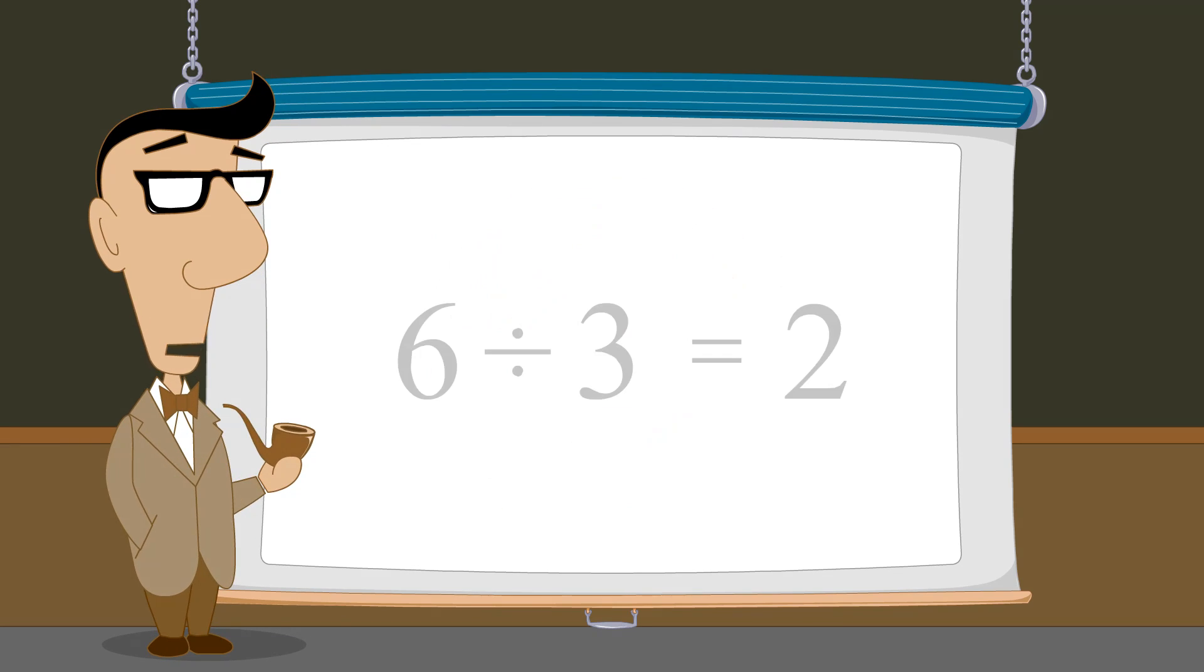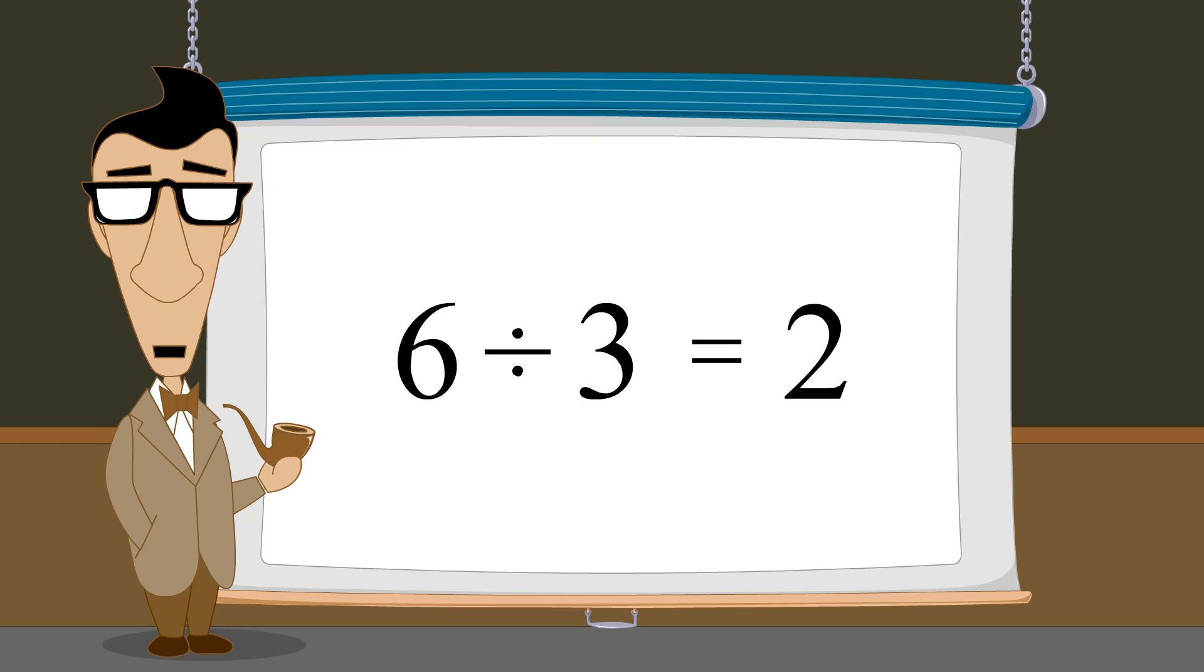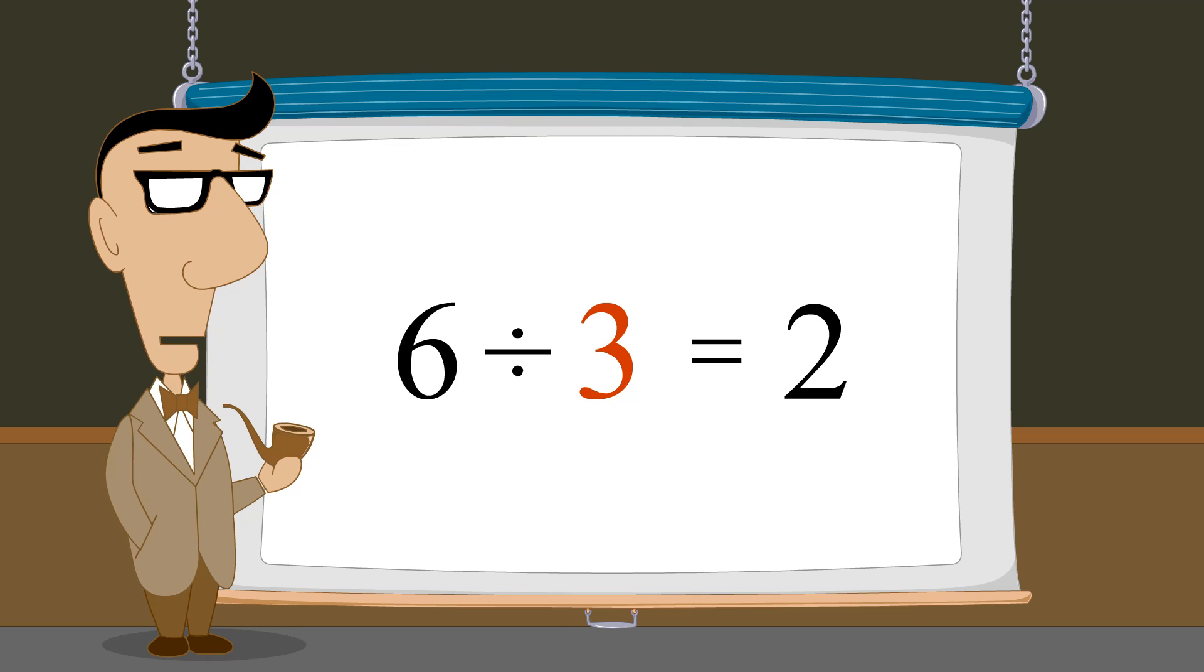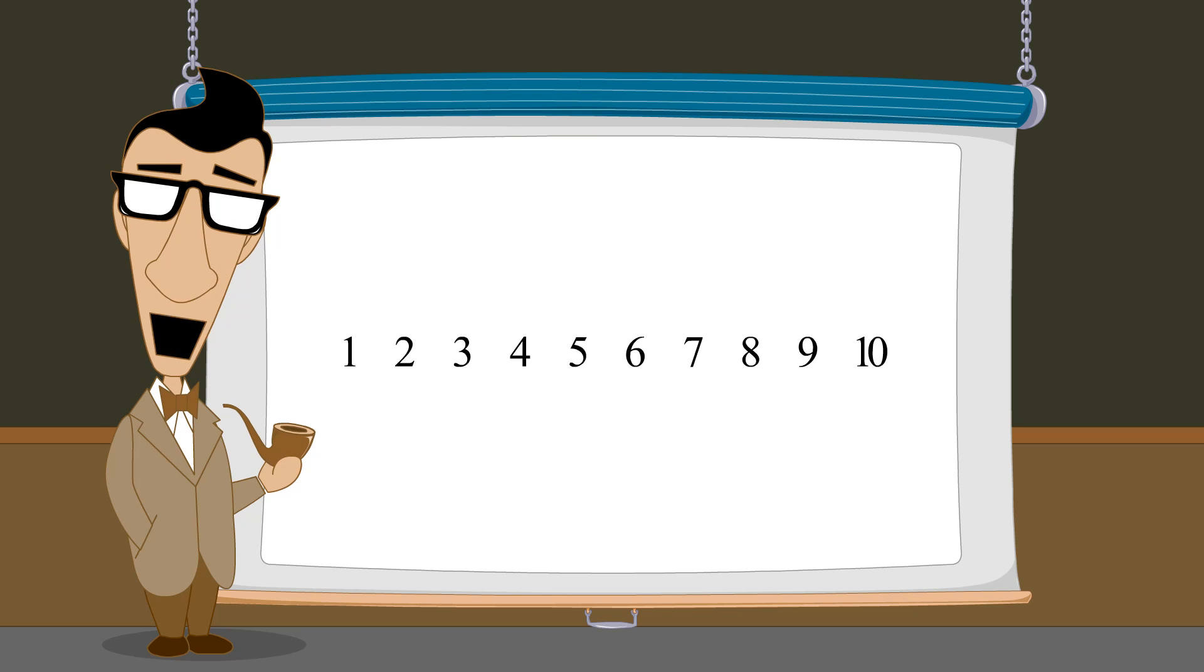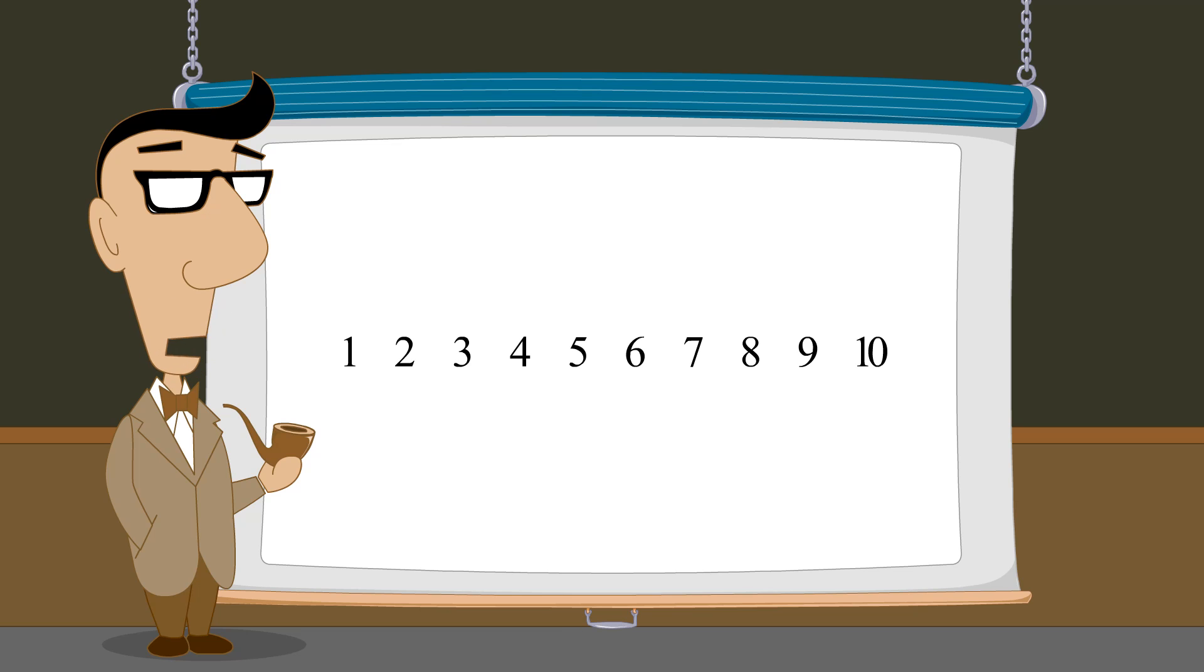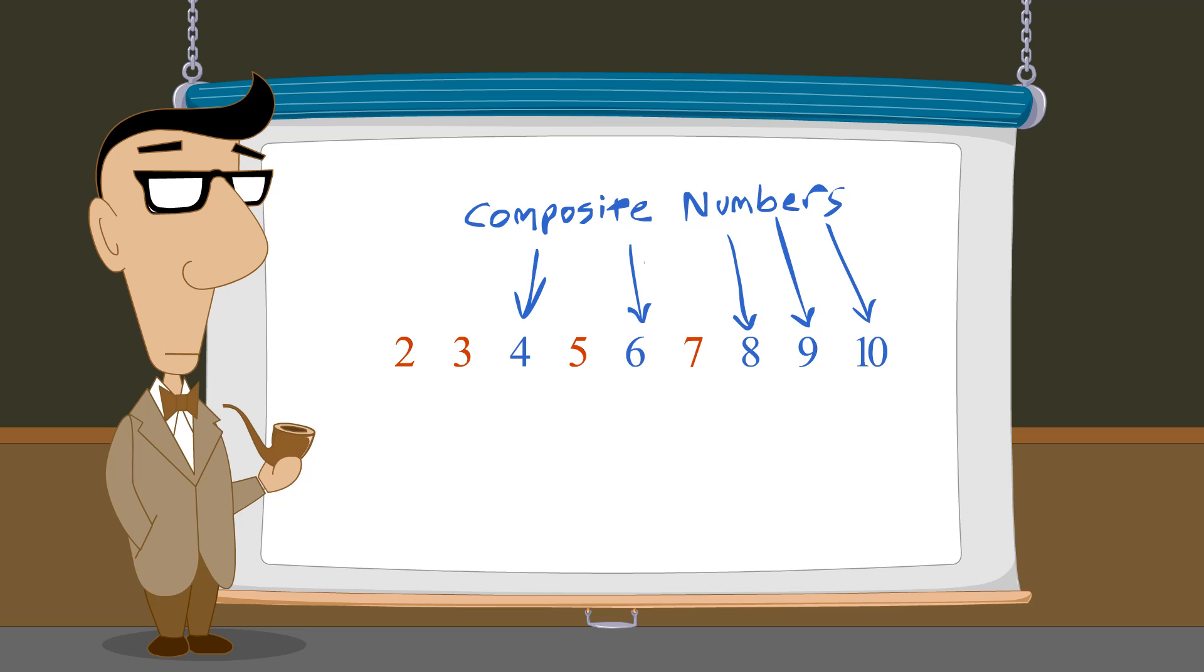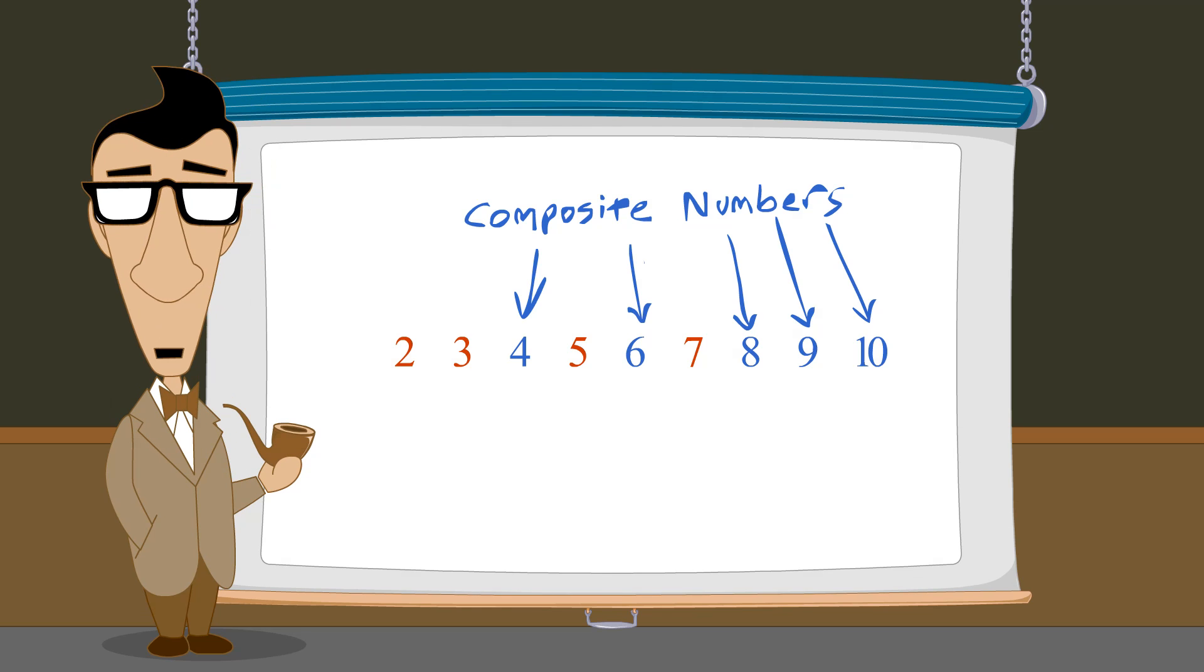In the previous lecture, we saw that numbers which divide evenly into a natural number are said to be that number's factors. For instance, since three divides evenly into six, we say that three is a factor of six. Numbers that have exactly two factors, themselves and one, are called prime numbers. Numbers greater than one, which are not prime, are composite numbers. And all composite numbers can be broken down into a product of prime numbers.